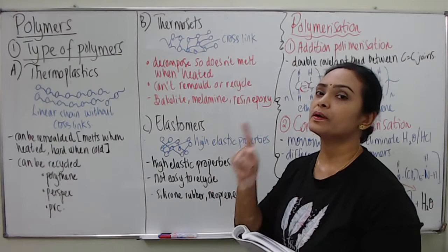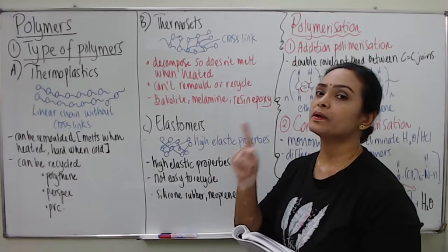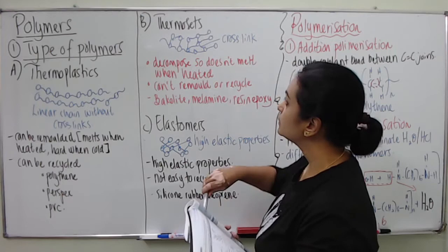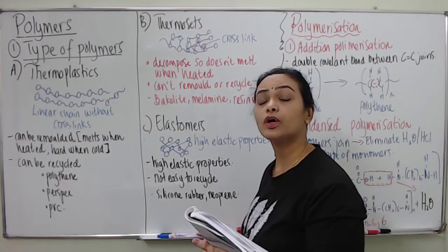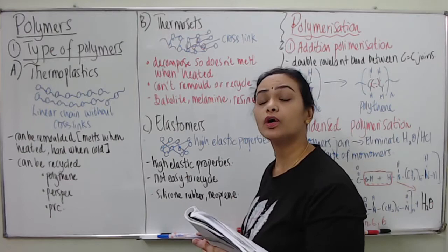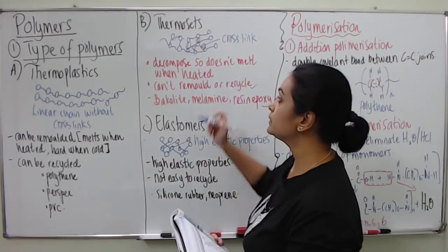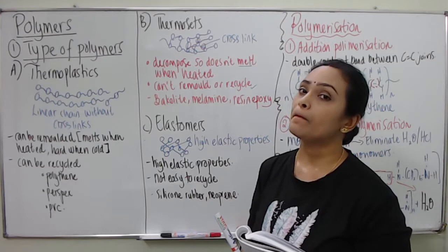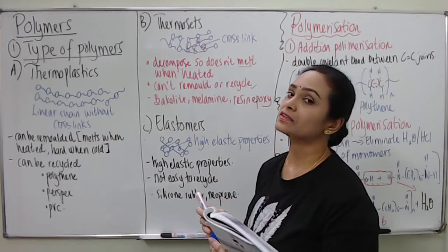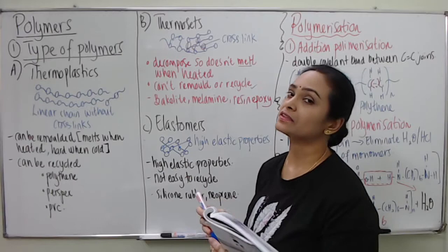Now let's go to number two, thermosets. Thermosets have cross-links amongst the linear chain. Because they have cross-links, they cannot be remolded or recycled. They only decompose because they cannot melt when heated — they will straight away decompose. These kinds of plastics might produce poisonous gas. So that is the reason why thermosets are a bit dangerous when it comes to the environment.